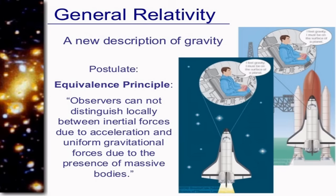In general relativity, we have the equivalence principle, which states that observers cannot distinguish locally between inertial forces due to acceleration and uniform gravitational forces due to the presence of massive bodies. Here you are talking about just one single frame of reference in most cases, and it is an accelerated one.